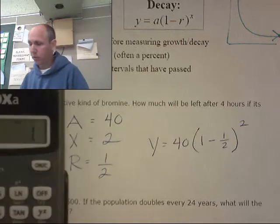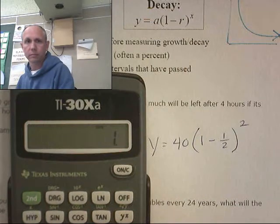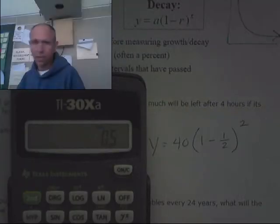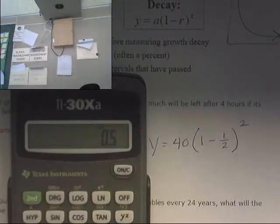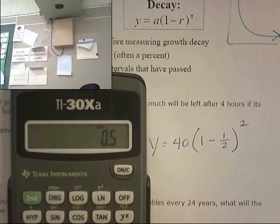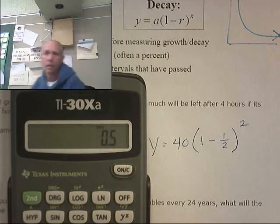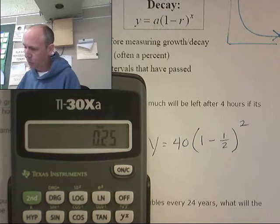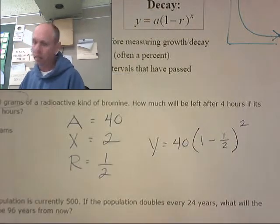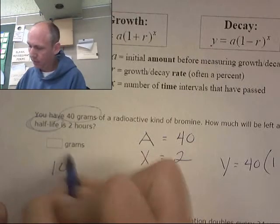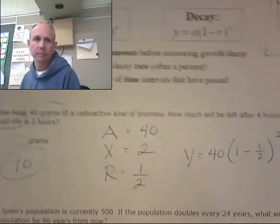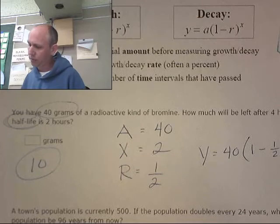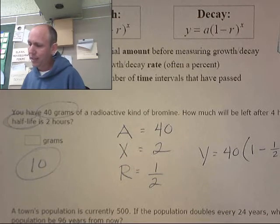1 minus – I'll show you what's going on here. So I'm going 1 minus 0.5. Yes, this is 0.5. Lights just went out. Let me get that on. I'm going to raise that to the second power. And then I'm going to multiply it by 40, which means I have 10 grams of this stuff left. How much will be left? Okay.